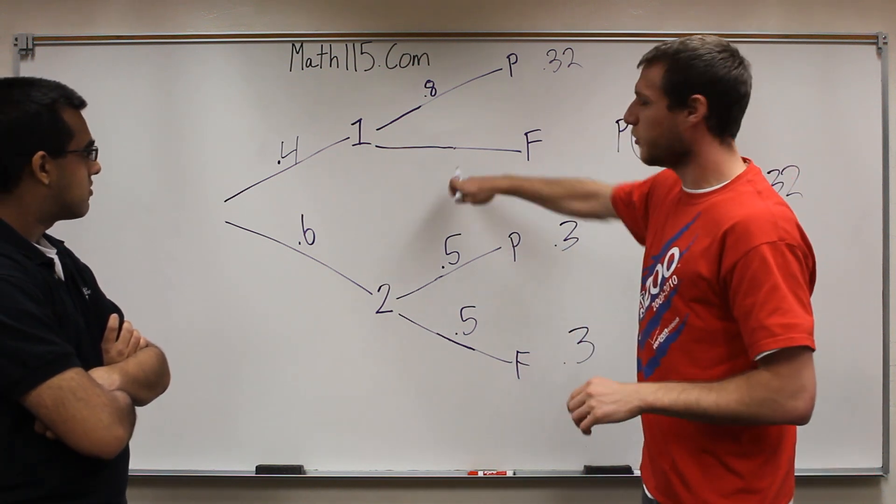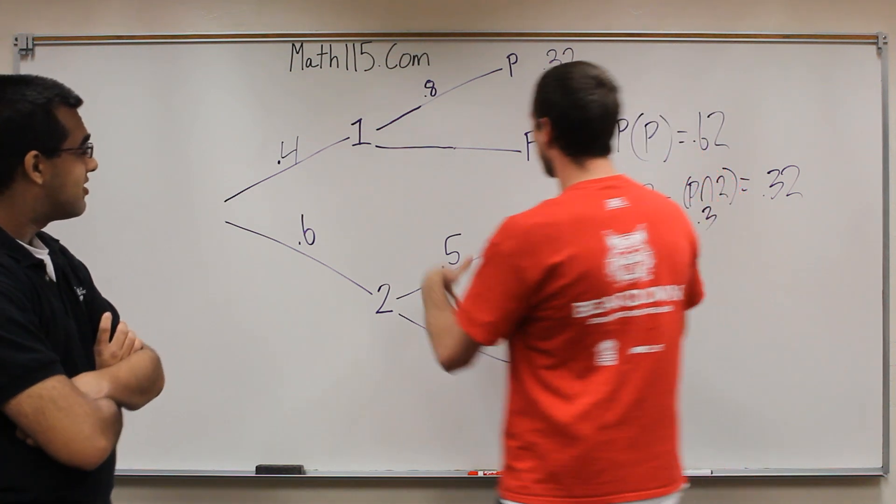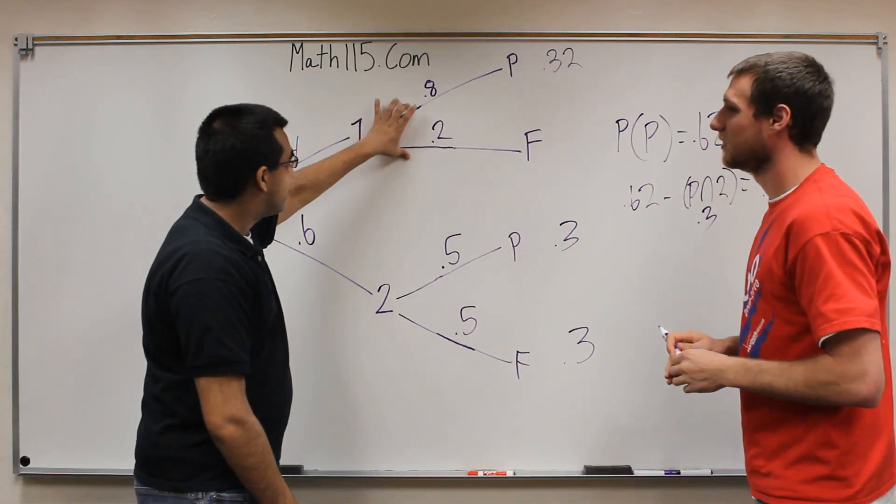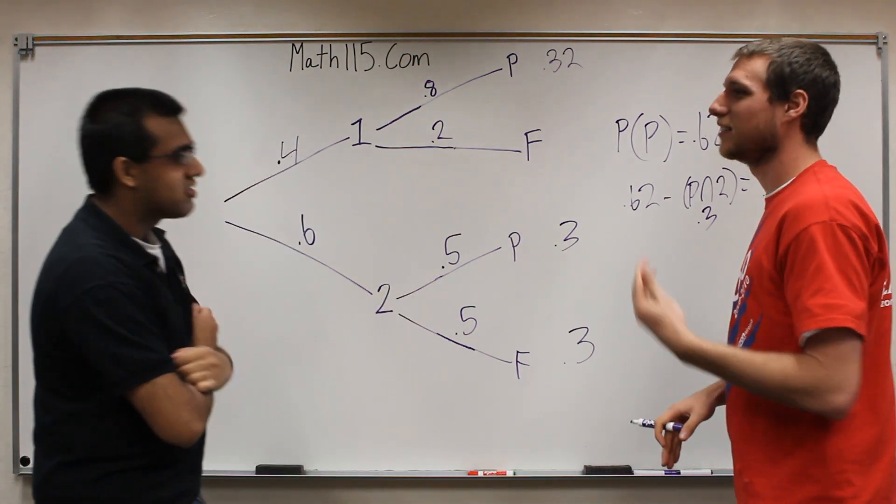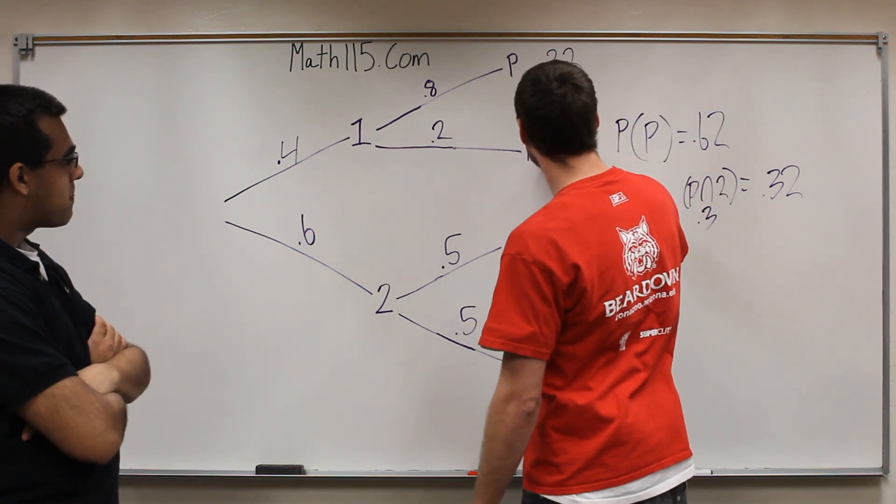Now we're going to want to work backwards to find our missing spots. We multiply this times this to get the intersection, so if we divide the intersection by the probability in section 1, we should get the conditional probability. So this should be 80%. So then do you know how many people fail from section 1? It must be 20%. These two numbers here need to add up to 1 just like these two numbers did here. So that would make that 20%. So now when we multiply across again, we'll get 0.08.